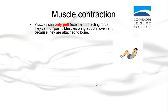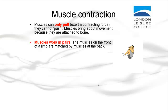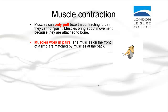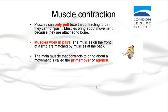Muscles also work in pairs — the muscles on the front of a limb are matched by the muscles at the back. The main muscle that contracts to bring about a movement is called the prime mover, or the agonist.